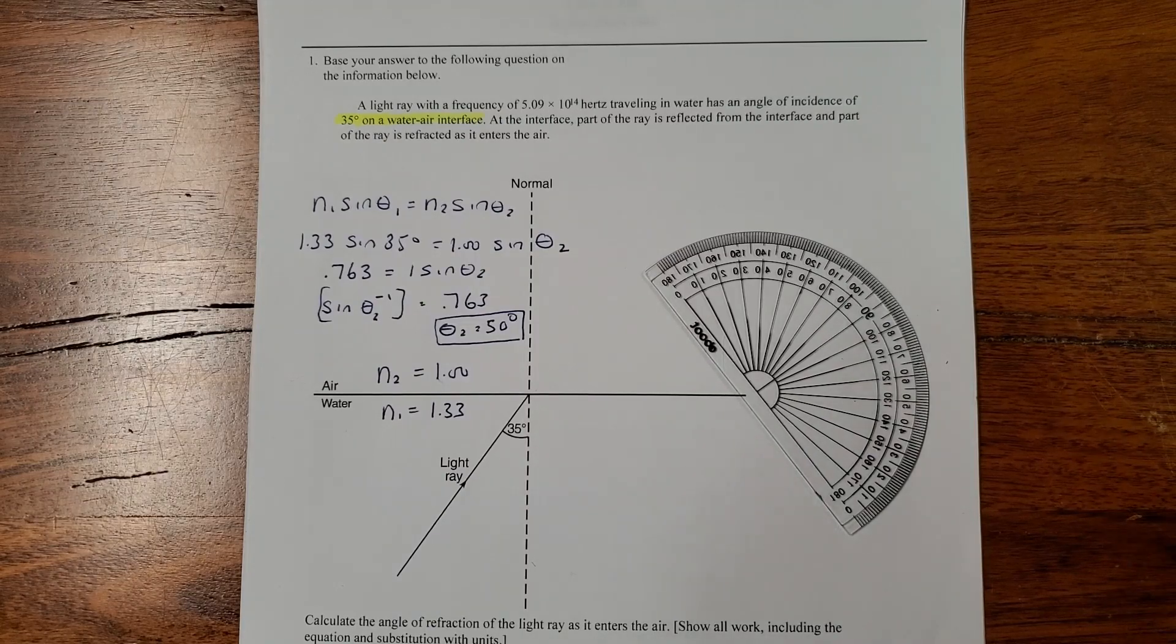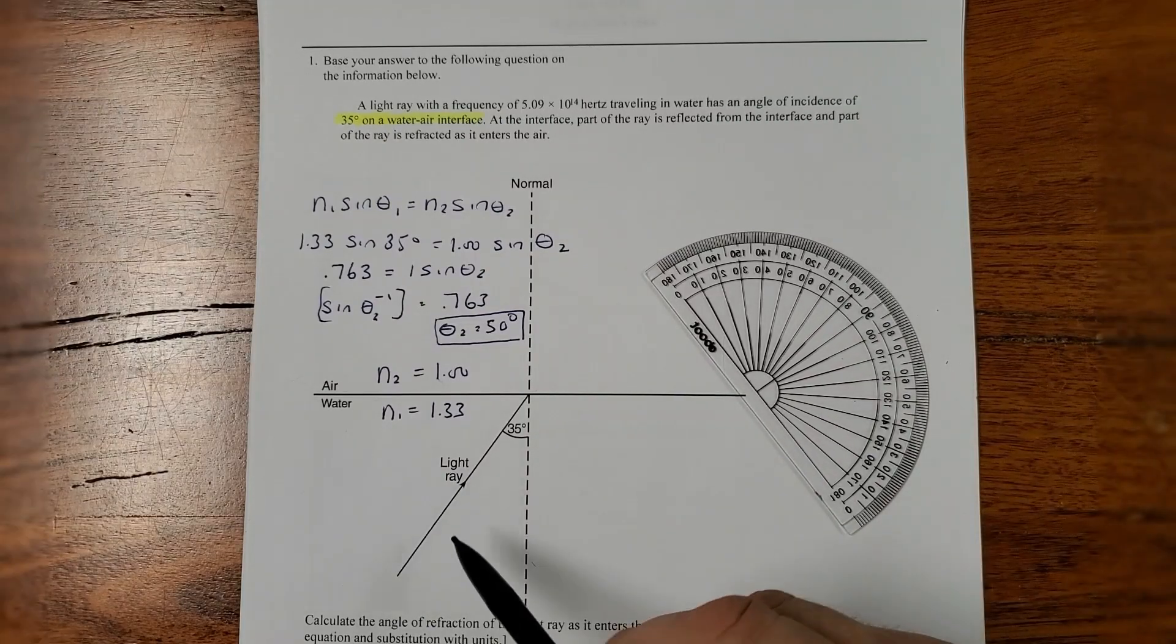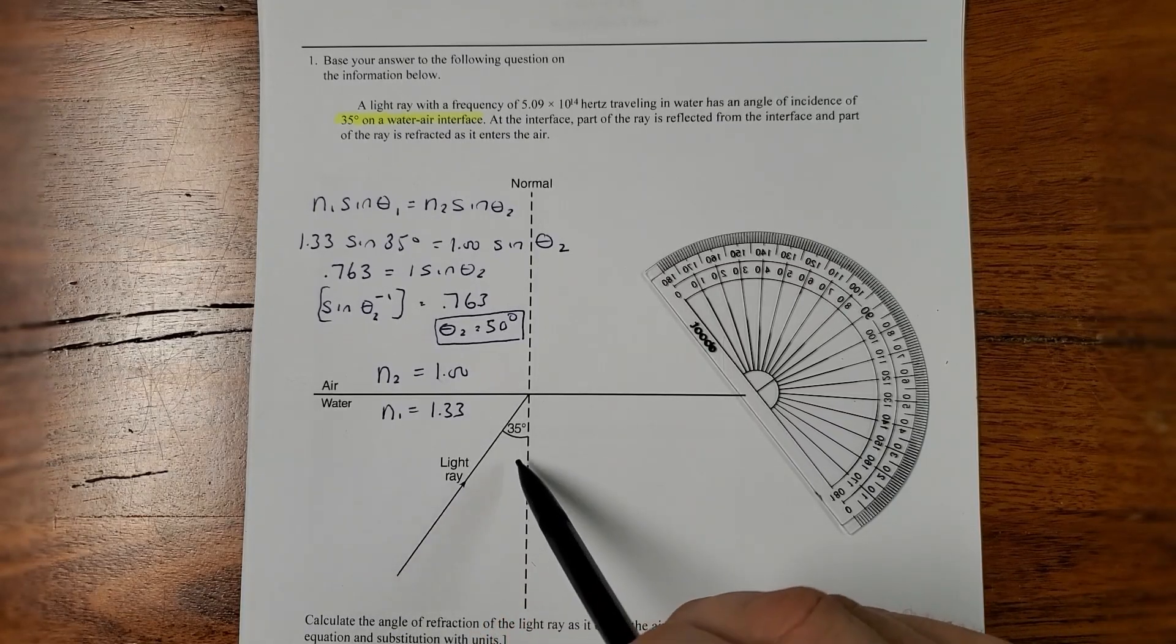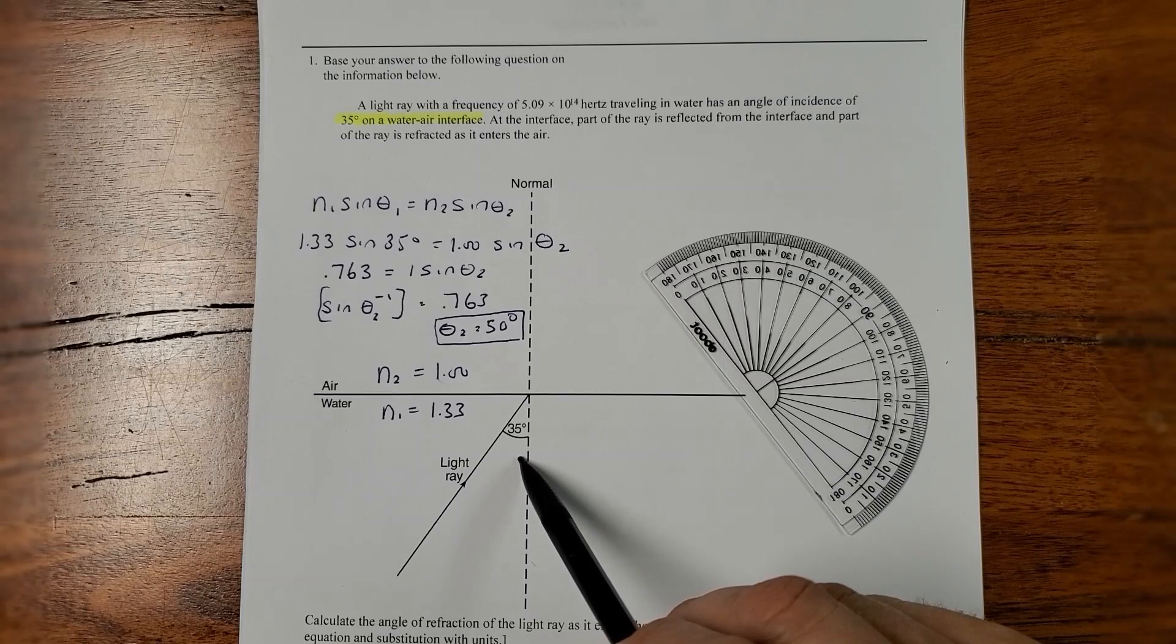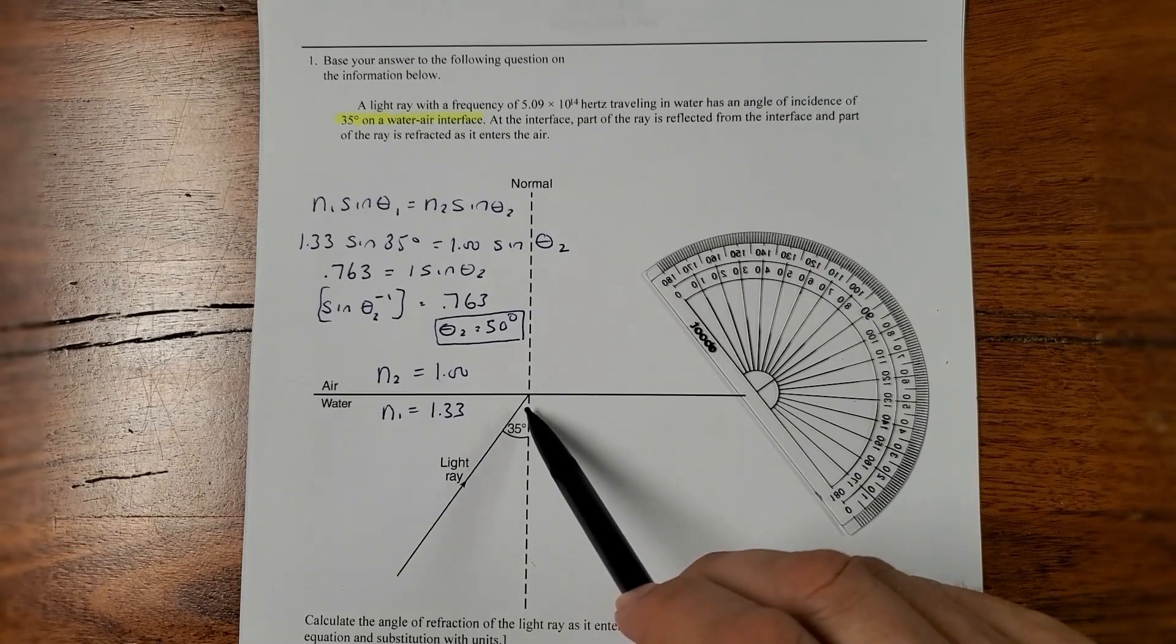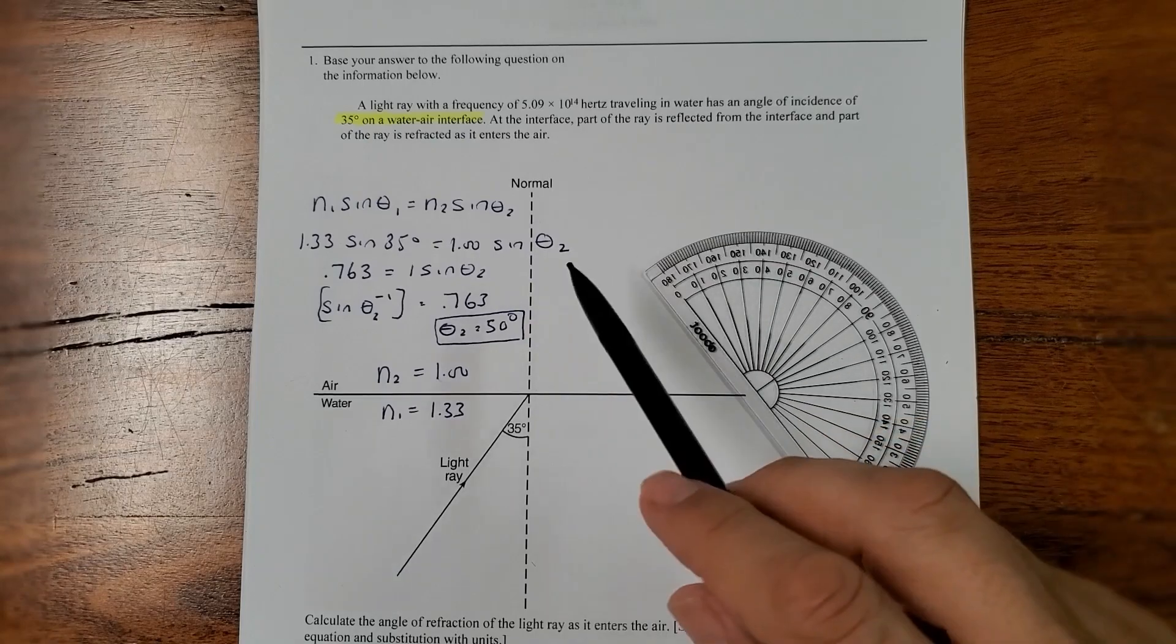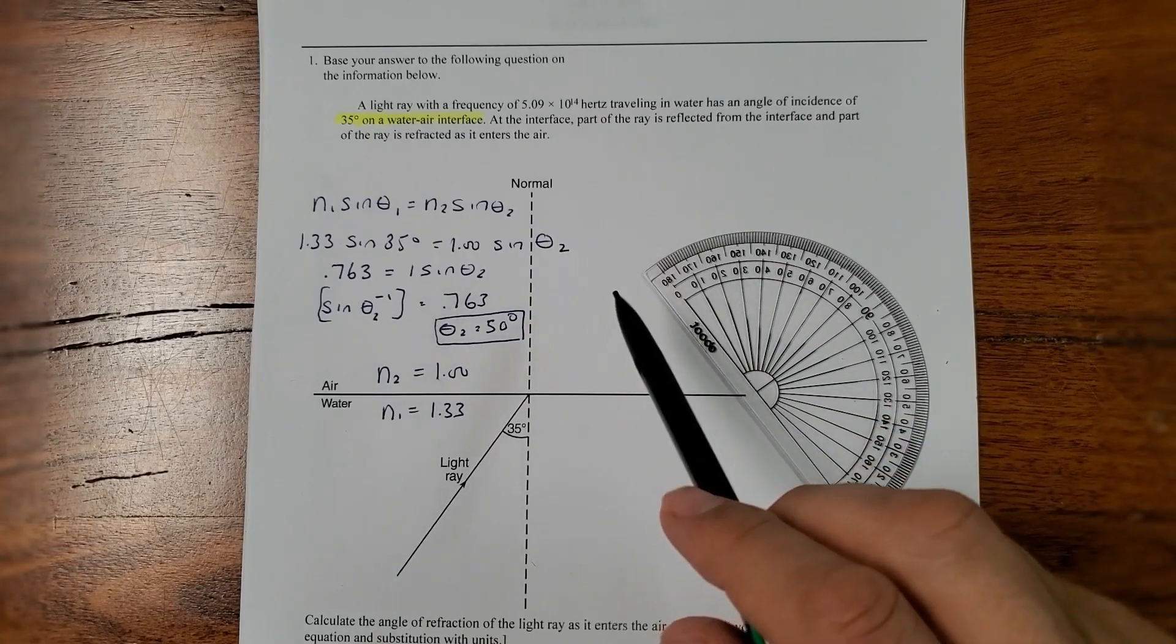Okay, we have a refraction problem here. We have a light ray coming, starting in water, and coming at an angle of 35 degrees to the normal. And it will cross over to air at a certain angle, but we don't know what that angle is, and we want to find that angle.